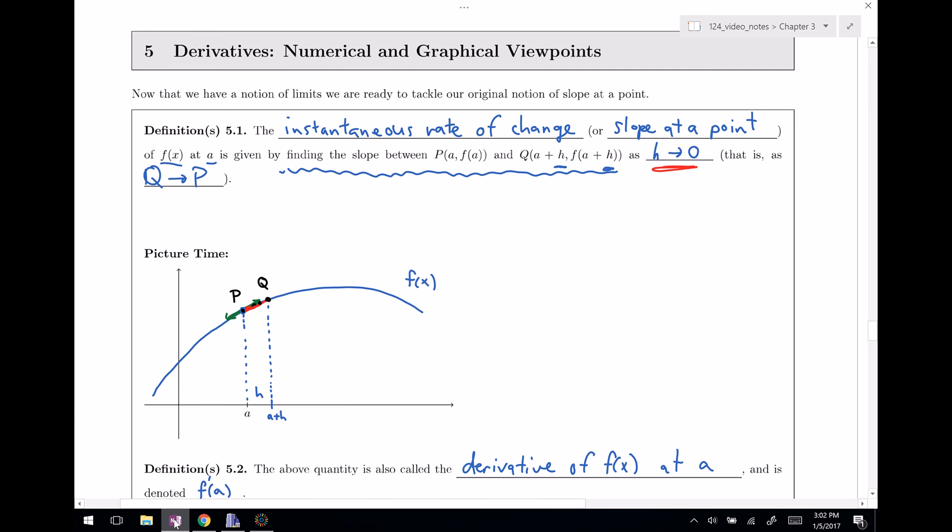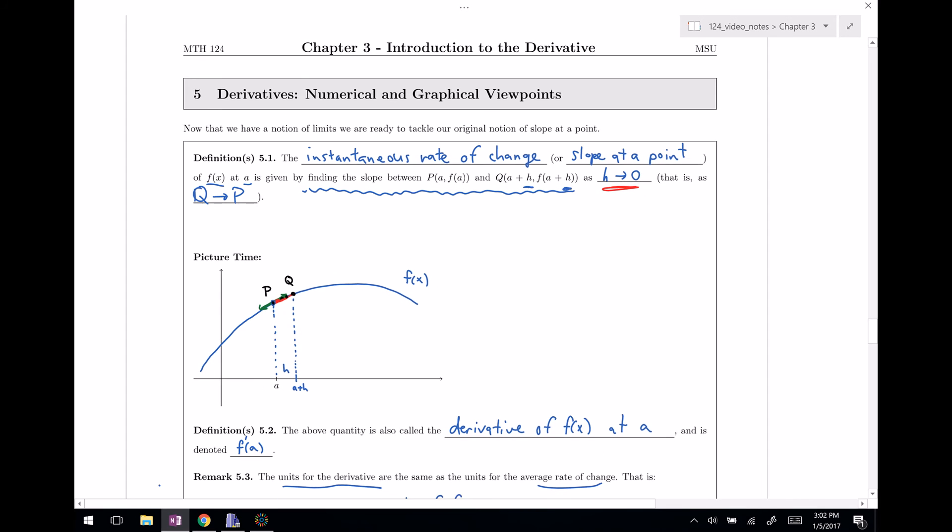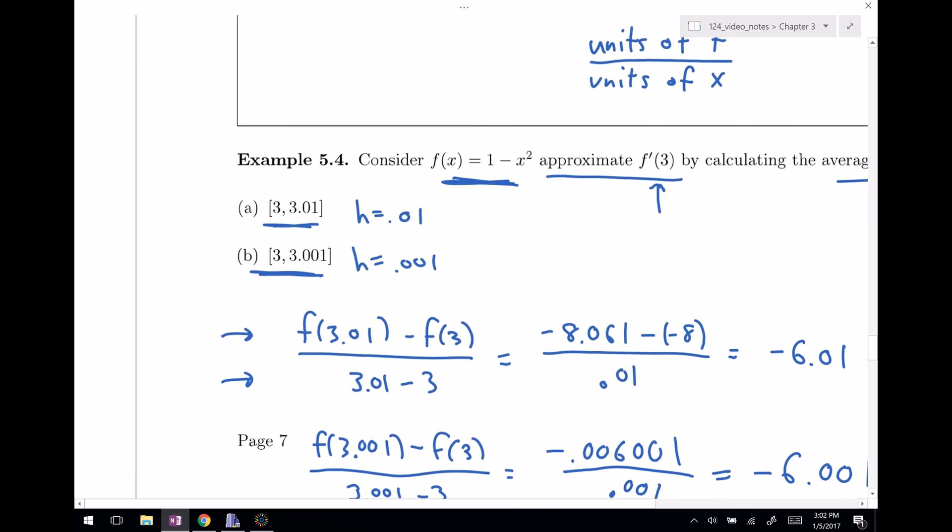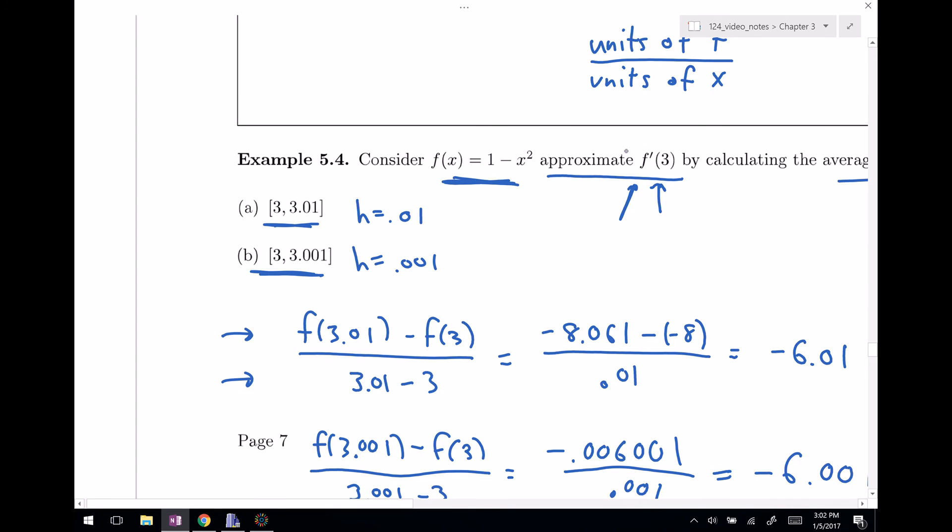Okay, so now let me go back and kind of explain one more time what we did here in example 5.4. So in example 5.4, we wanted to approximate the slope of the tangent line or the instantaneous rate of change or this derivative of our function at three. Now in order to do that, we took very small values of h. So in this case, our a value is three, so you think about this as our P or our red point, and then our Q is off by .01. So these are very, very close to each other, and the claim is that this right here, the slope between these two points would approximate the instantaneous rate of change.